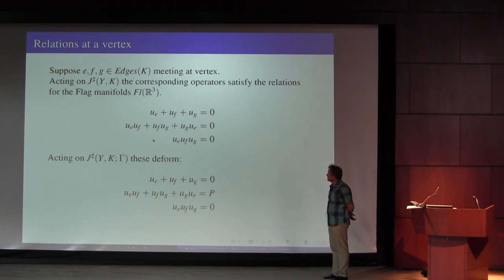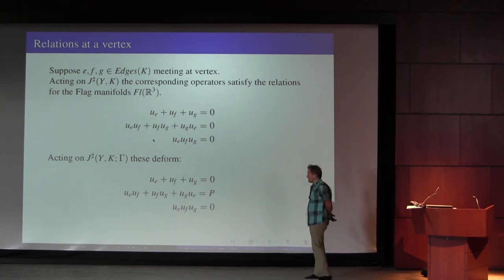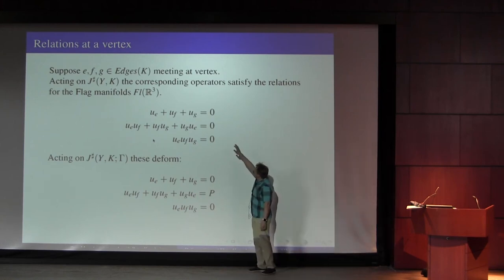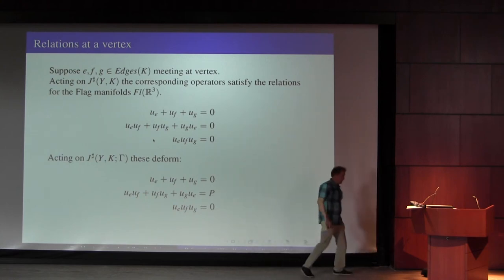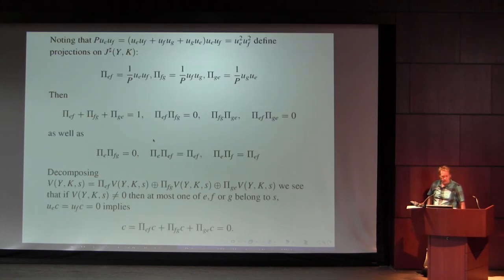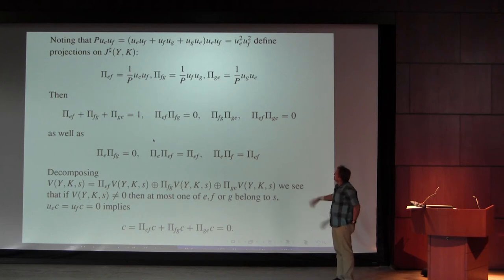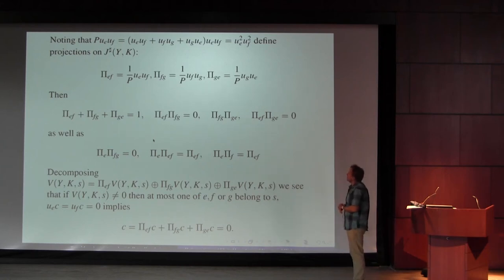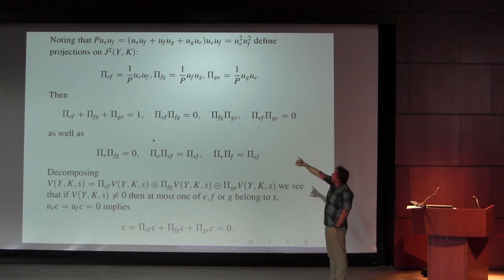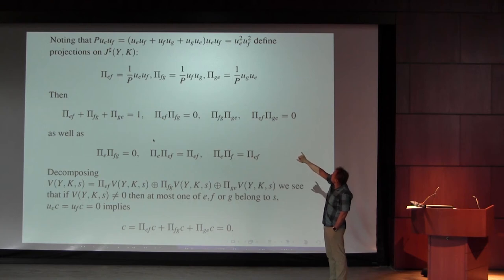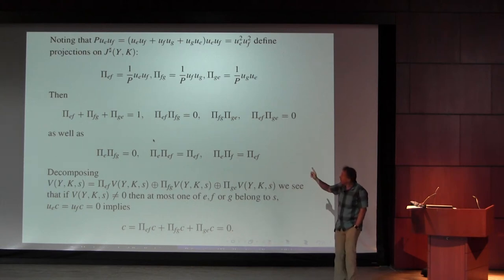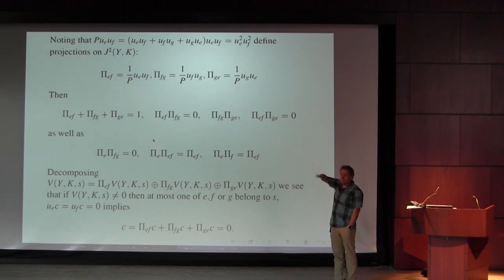When you do the analogous story for the twisted coefficients, the first and third relations remain the same but the second one deforms — you get this copy of p. That lets you define some further projections. Notice that p · u_e · u_f — p was equal to a monomial of degree two — so p · u_e · u_f is a monomial of degree two times u_e · u_f, but in that product if all three things appear, it's zero because of the three-dimensional relation. So the only thing left is u_e² · u_f², giving another projection π_ef = (1/p) · u_f², etc.